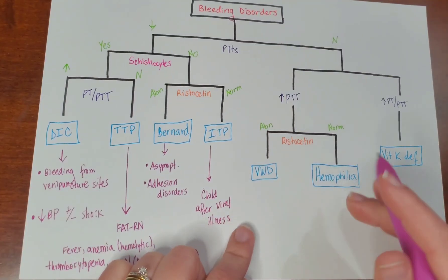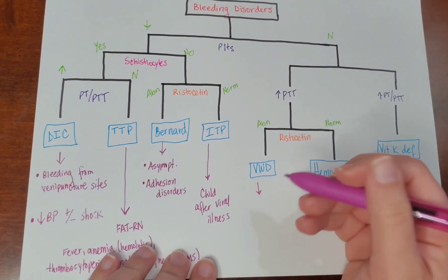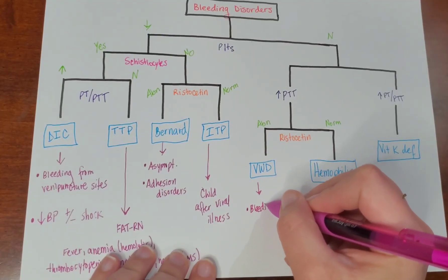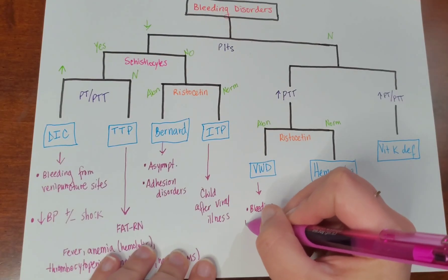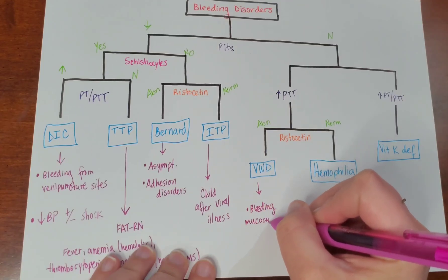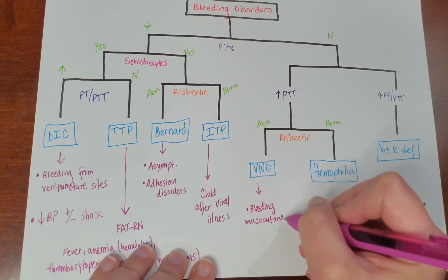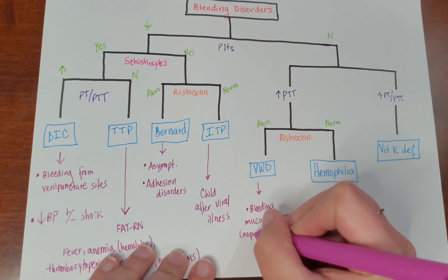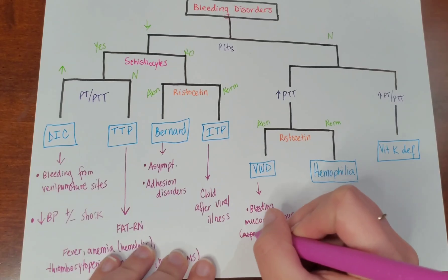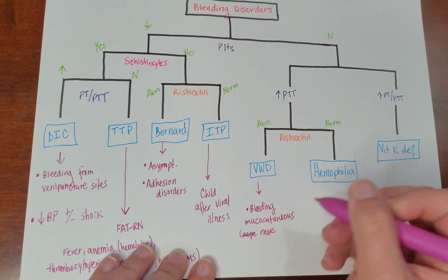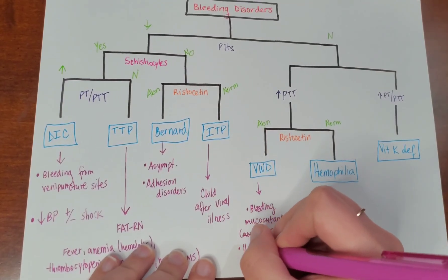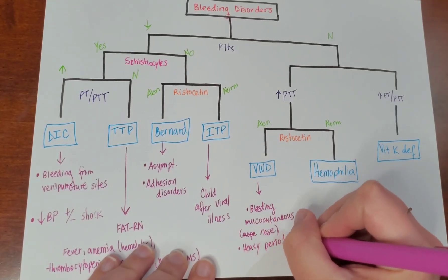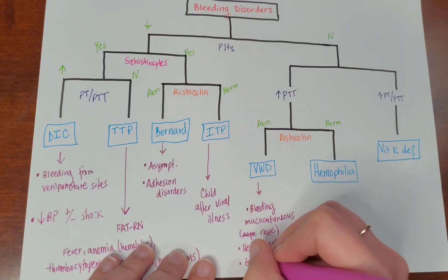Von Willebrand factor — this one's asked quite a lot. You'll be seeing just bleeding from mucocutaneous sites. You would have heavy periods, a lot of bleeding, and you'd see easy bruising.